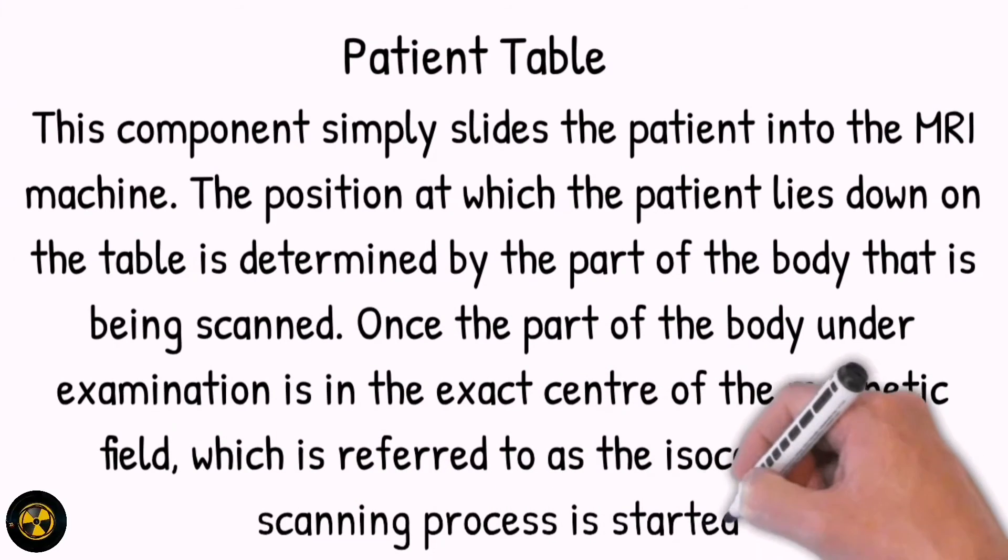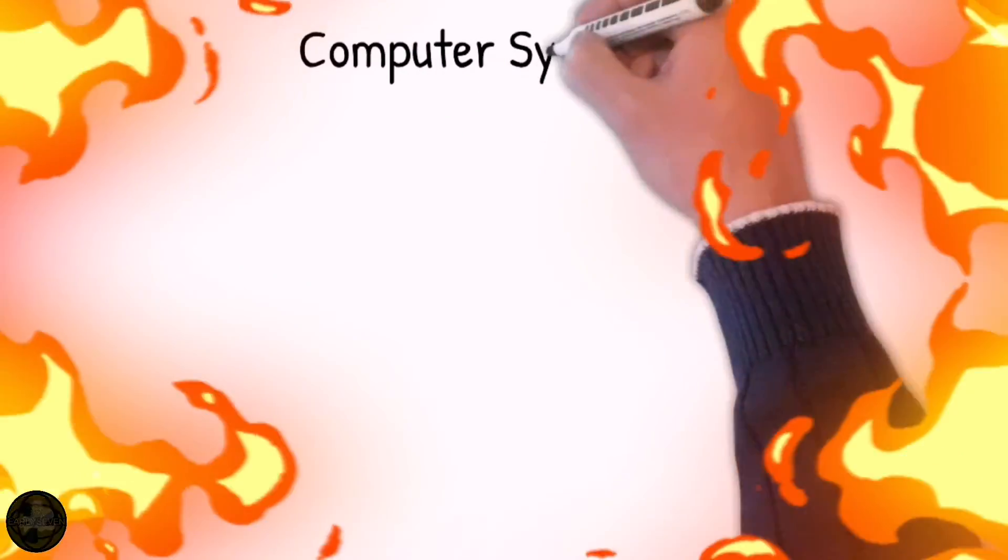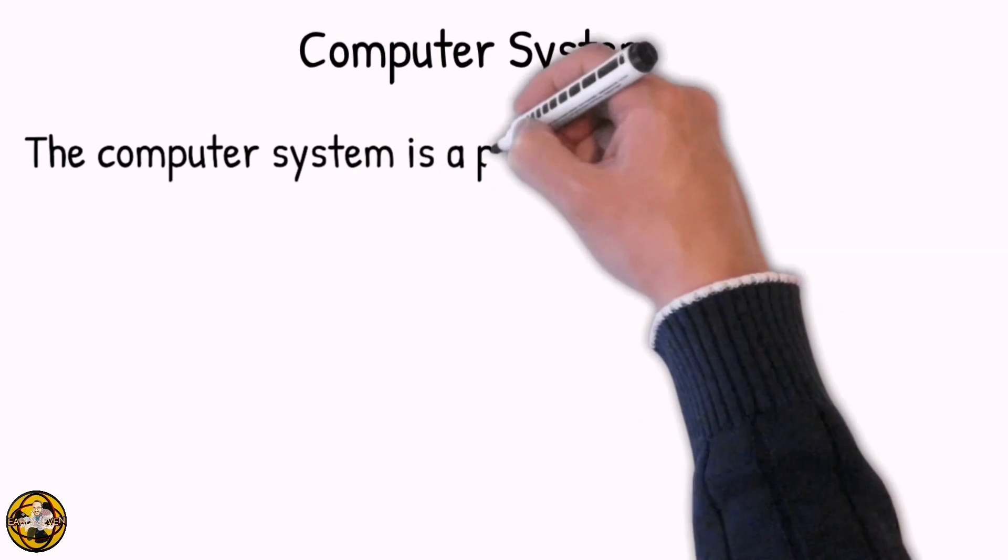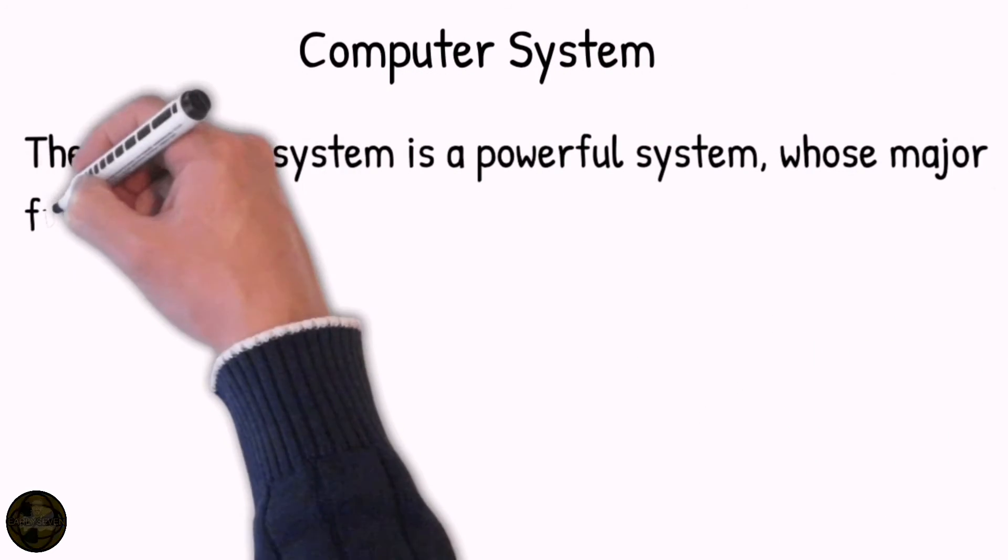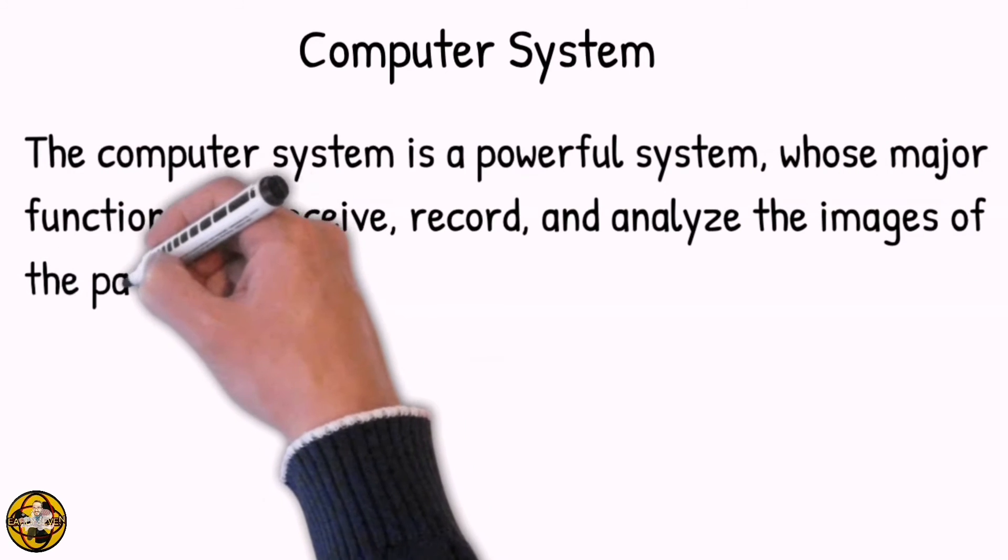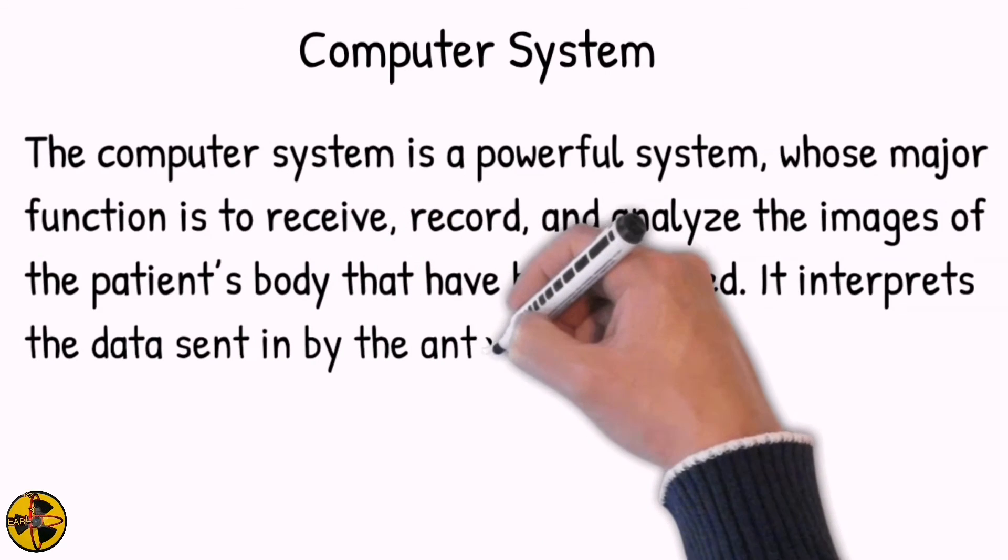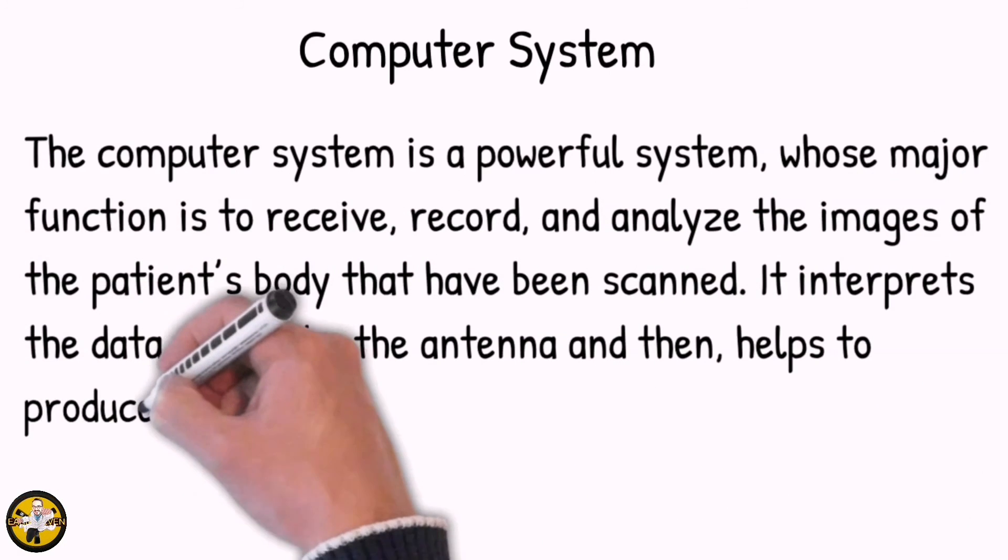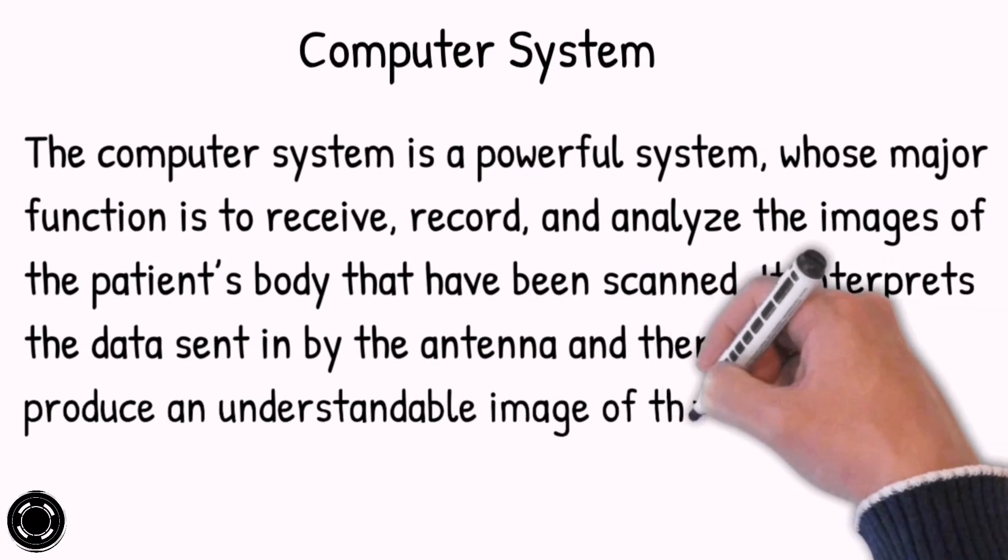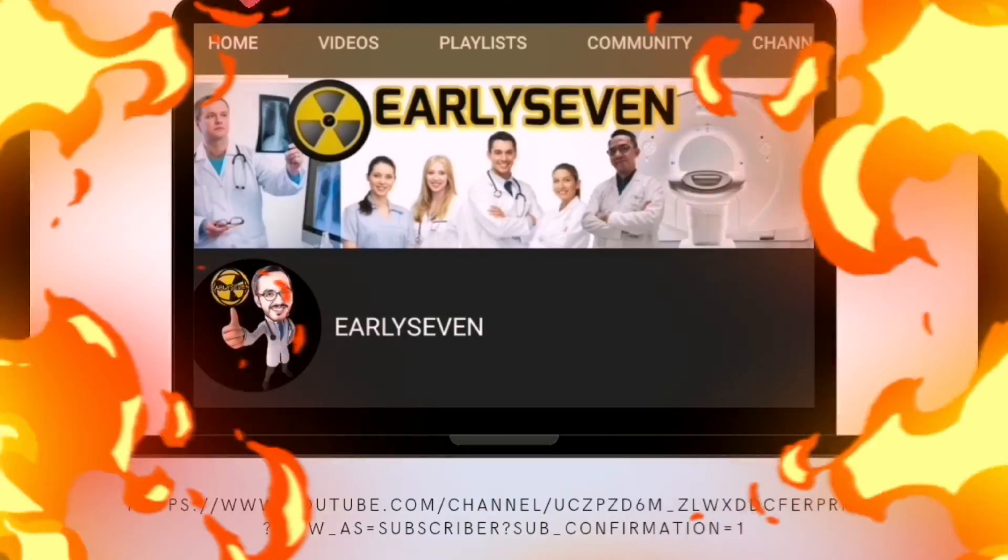The last component of an MRI scanner is the computer system. The computer system is a powerful system whose major function is to receive, record, and analyze the images of the patient's body that has been scanned. It interprets the data sent in by the antenna and then helps to produce an understandable image of the body part being examined.